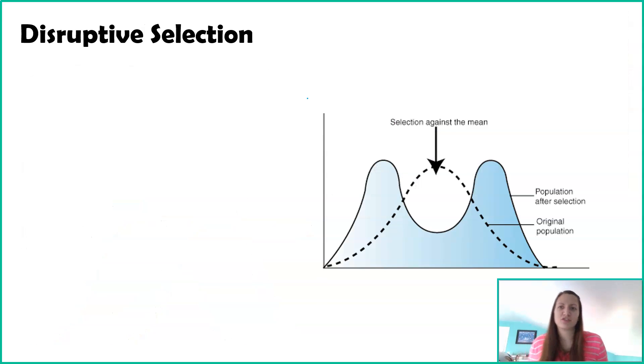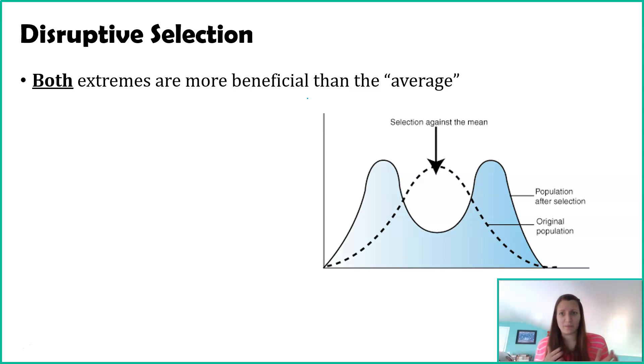The last type of selective pressure we have is disruptive selection. Essentially, both extremes are being favored more so than the average. Directional selection was just one extreme. For disruptive selection, it's both extremes at the same time. This graph shows a nice bell curve as the dashed line, and the solid line is showing us what disruptive selection looks like. We have a lot at the extremes and not so much in the middle or average.